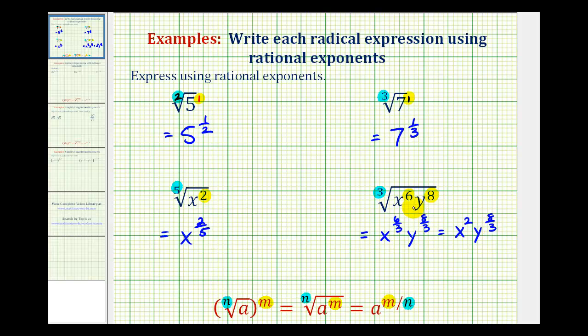Another way to show this would be to write the radicand of x to the sixth, y to the eighth raised to the one-third power, because remember, taking the cube root of something is the same as raising it to the one-third power, as we saw from this example. And now notice we have powers raised to powers, so we multiply the exponents.